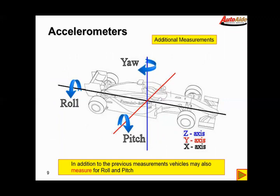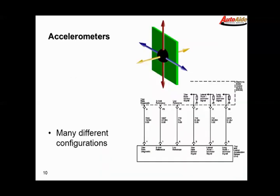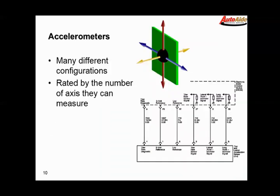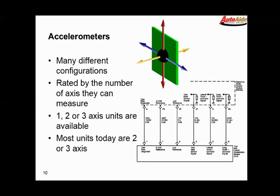With all of this data we can now calculate roll, pitch, and yaw, so the vehicle can pretty much measure any direction the car is pointing—up, down, sideways, or whatever. We have a pretty complete picture based on this of where the car is going and how it's getting there. Accelerometers come in a whole bunch of different shapes and sizes. They're typically rated by the number of axes they can measure. One, two, or three-axis units are available. Most units today use two or three-axis accelerometers.